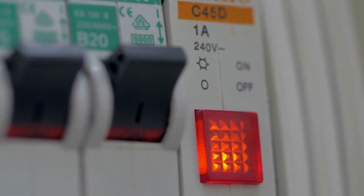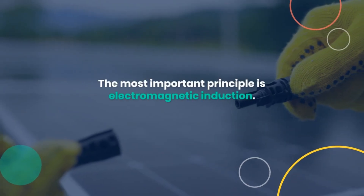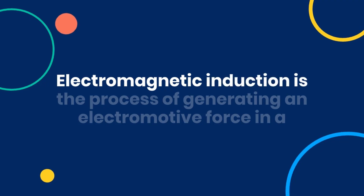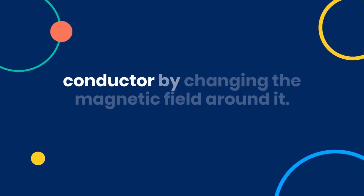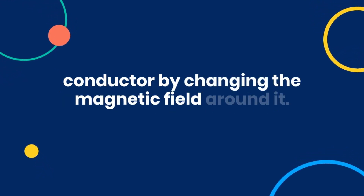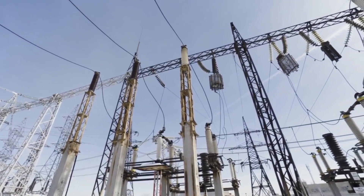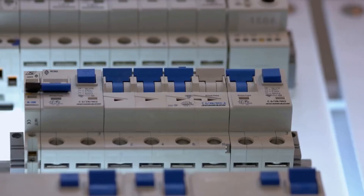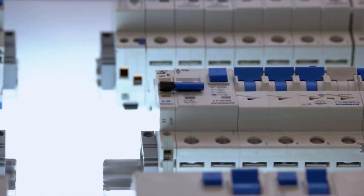Question twenty-four: What is the principle of electromagnetic induction? Electromagnetic induction is the process of generating an electromotive force in a conductor by changing the magnetic field around it. This principle is the basis of transformers, inductors, and many types of electrical generators and motors. Understanding this principle is fundamental for many applications in electrical engineering.